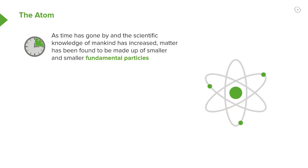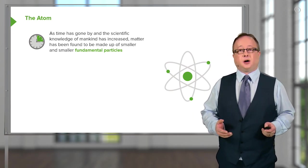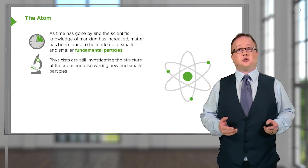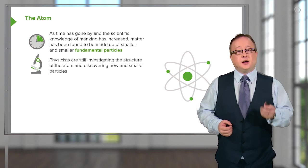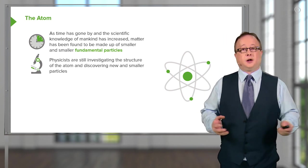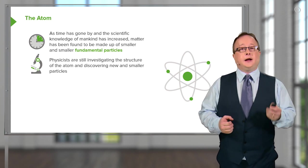As time has gone by, within the last 100 to 150 years, the scientific knowledge of mankind has increased, and matter has been found to be made up of smaller fundamental particles. In particular, if we look at subatomic particles which you may be familiar with, such as protons, neutrons, and electrons, they themselves are actually made up of even smaller particles falling into the quark and lepton class.